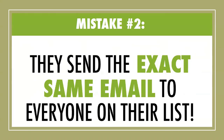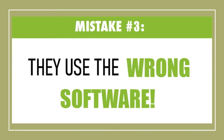Mistake number two: they send the exact same email to everyone on their list. Mistake number three is they use the wrong software. Did you know that the sender reputation is based on your email software that you use? You can't do anything about your mail provider's sender reputation, but what you can do is work on your SPF — the Sender Policy Framework. Basically that says this is going to be my agent, but they're sending on my behalf, so please don't take their reputation. I want to build my own reputation.